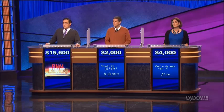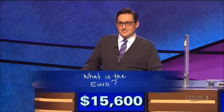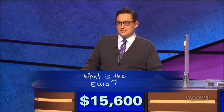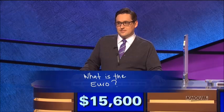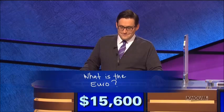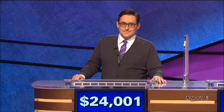Now we come to Brian Hamilton. What's the fifth letter of the Greek alphabet? He came up with what is the euro as the international symbol. The fifth letter is epsilon, and you are correct. And you will add how much for the euro? $24,001, and a three-day total of $45,202.